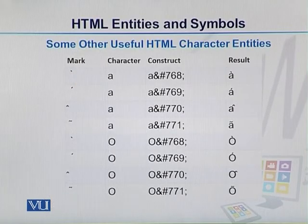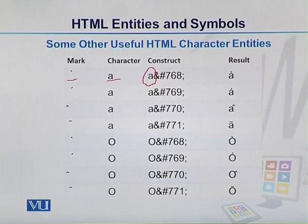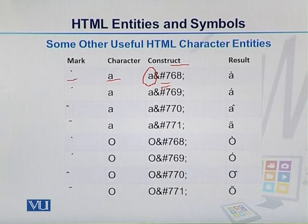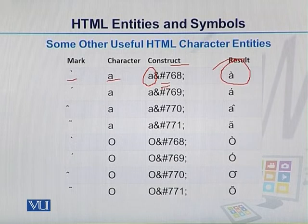Diacritical marks are most common in French and German. These are typical examples of those. If you want to use a particular mark with a character like A, you present the character, then use the number for that particular mark, and this is the result you get. You can have a full list of all these characters and diacritical marks which you can use in HTML — available in your handouts.